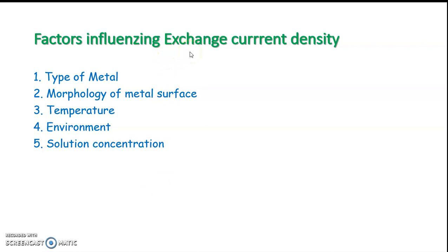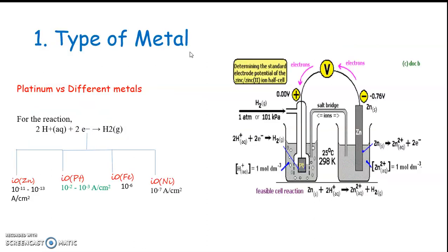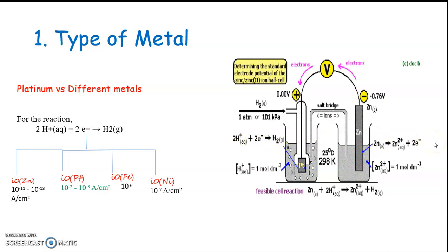There are different factors which influence the exchange current density. The first factor is the type of metal. Here you can see a complete cell reaction where zinc acts as the anode and the standard hydrogen electrode is the cathodic part. It consists of two half-cell reactions — the oxidation reaction and the reduction reaction — and for the two half-cell reactions we have two corresponding I₀ values: I₀ of zinc and I₀ of hydrogen.